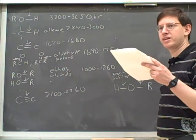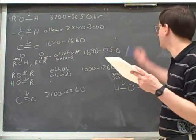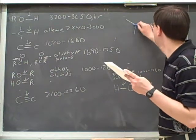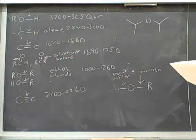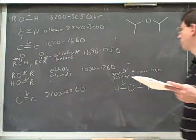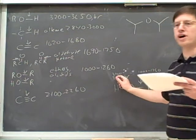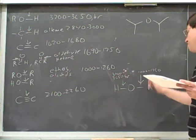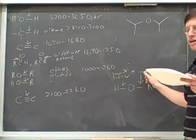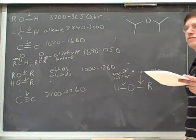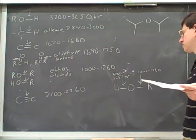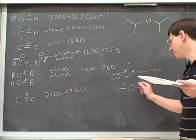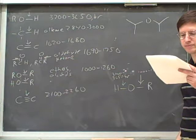So are we done with problem 37? The correct answer was the second molecule. If this was an alcohol, you would have one broad peak in this region, and you would have the peak that we already saw here in the 1000 to 1260 region. So the alcohol gives two absorptions: one from the OH bond and one from the oxygen-carbon bond.